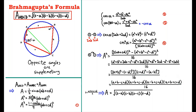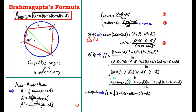Substituting S, which equals (A plus B plus C plus D) divided by 2 — the semi-perimeter — each factor becomes 2S minus 2C (and similarly for A, B, D). Dividing by 2 four times cancels the factor of 16 in the denominator. Square rooting both sides gives Brahmagupta's formula.